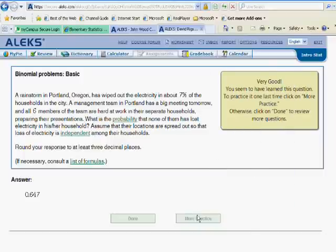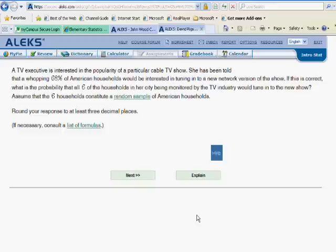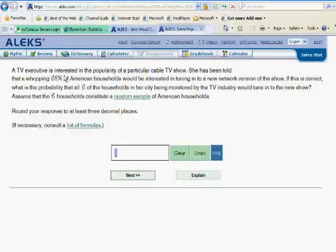Let's do one more. Okay, a TV executive is interested in the popularity of a cable TV show. She's been told that a whopping 68% of American households would be interested in tuning into the new network version of the show. If this is correct, what is the probability that all 6 of the households in her city being monitored by the TV industry would tune in to the new show? In other words, what we care here is an n of 6, an x of 6, and a p of 0.68.